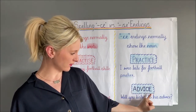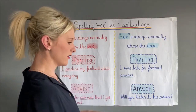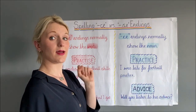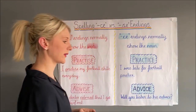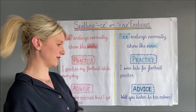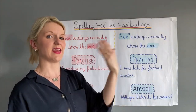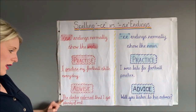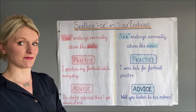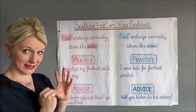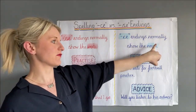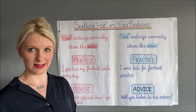Over here we've got advice, and the sentence says 'will you listen to his advice?' I know this is being used as a noun because there is a determiner in front of it. Advice means the thing — a suggestion — it's a thing that he's giving. Whereas in the other example, it's the doctor doing something rather than giving something. So to remember: SE is a verb if someone is doing it, and CE is for a noun — a person, a place, a thing, or an idea.